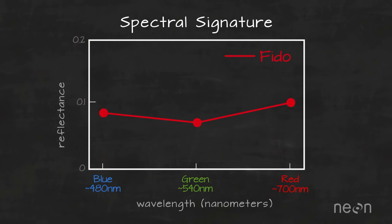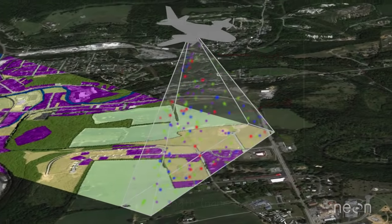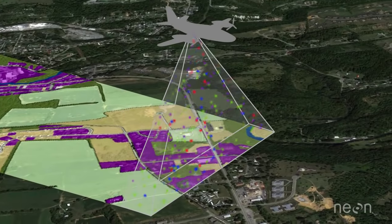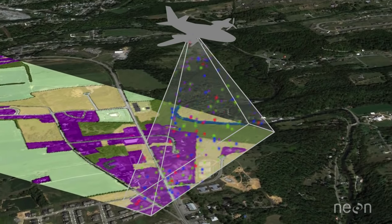The spectral signature for Fido is quite different from the spectral signature for a plant. This makes them appear visually different to our eyes too. Differences in spectral signatures can help scientists identify different types of surfaces and objects within images.